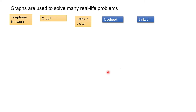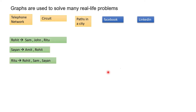Here we can take an example of Facebook. I have defined a few relations: Rohit is one person who has three friends — Sam, John, and Ritu. Sam has friends Amit and Rohit. Ritu has friends Rohit, Sam, and Sam. If I maintain this relationship in a graph, it will be easy to understand, maintainability will be easy, and we can draw many other conclusions easily by looking into the graph.